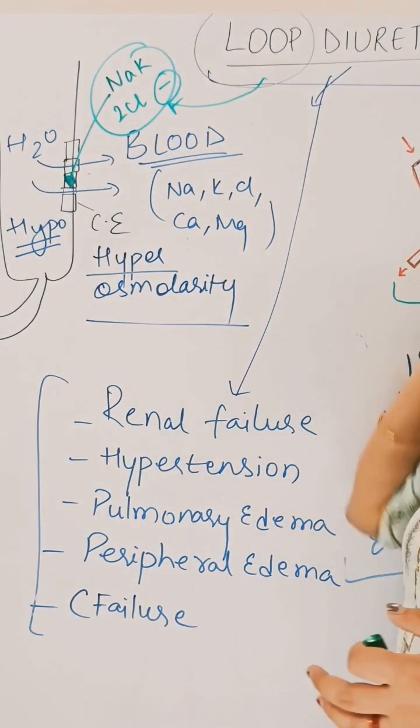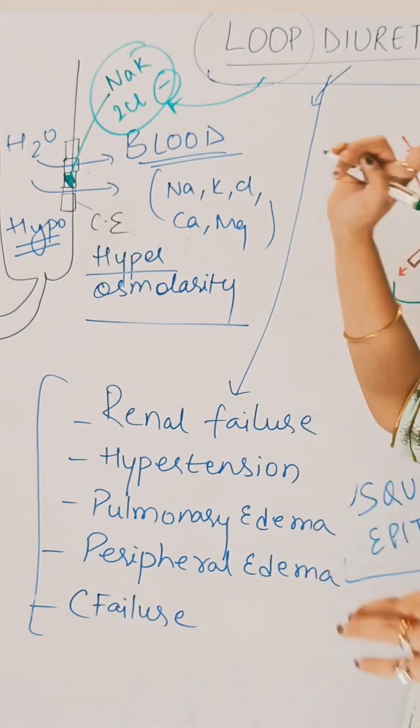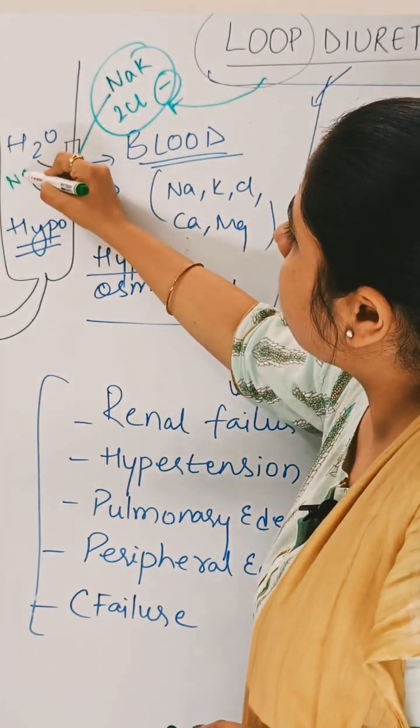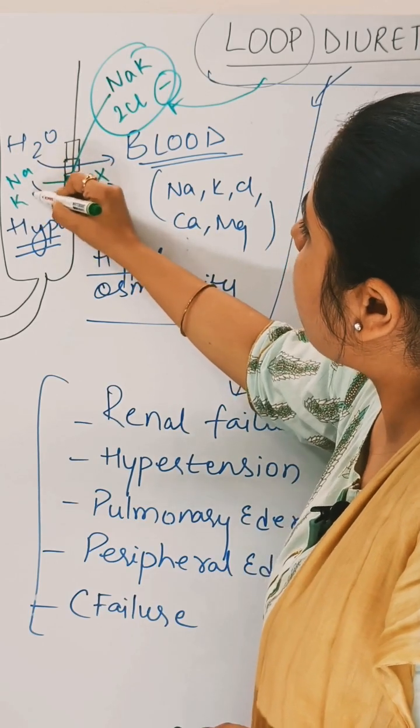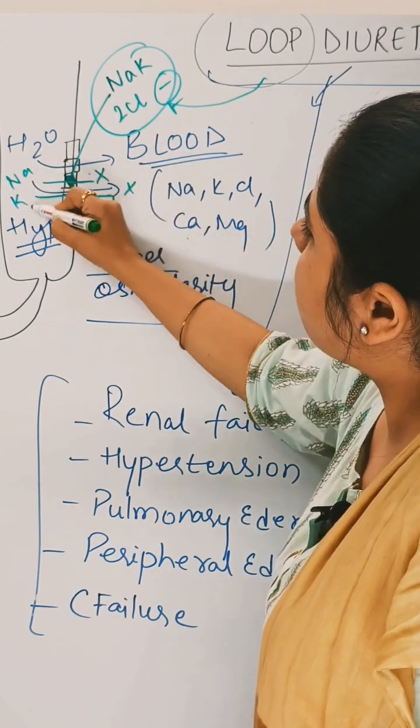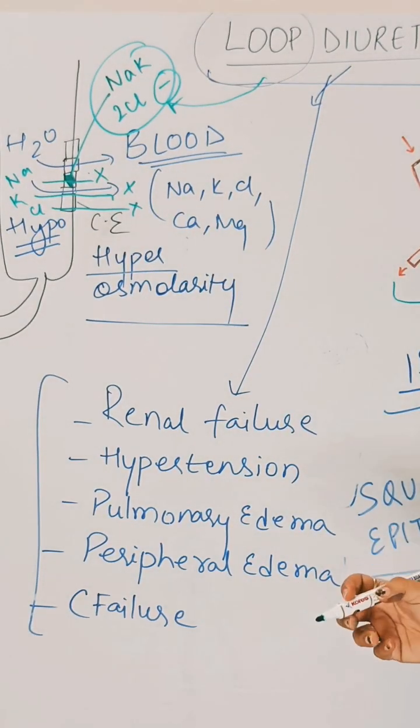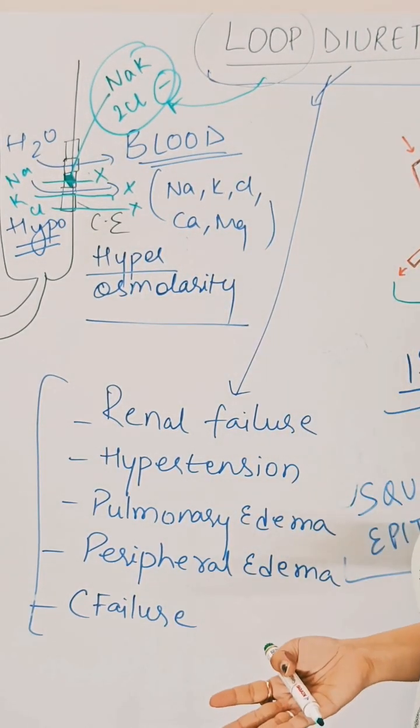They block the sodium, potassium, chloride cotransporter, and when that is blocked there is no reabsorption of sodium, potassium, or chloride. When there is no reabsorption of all these ions, then there will be no electrical gradient developed.